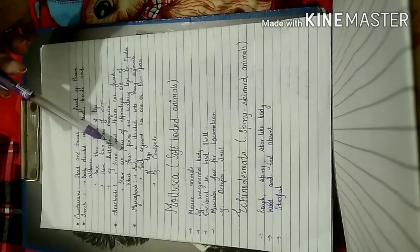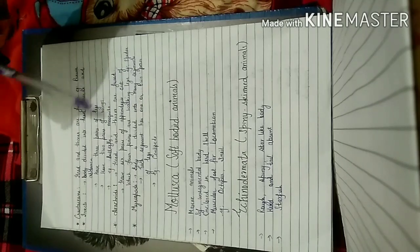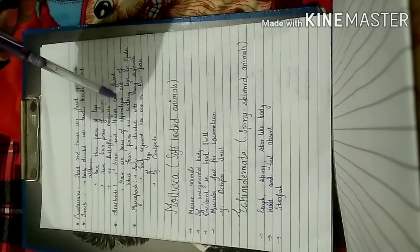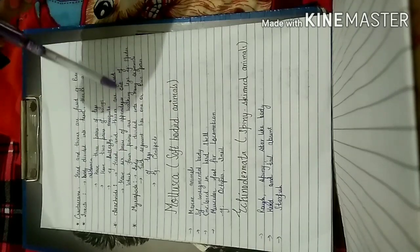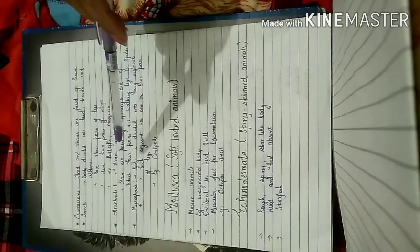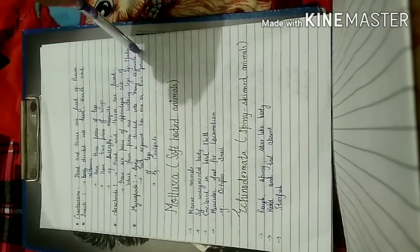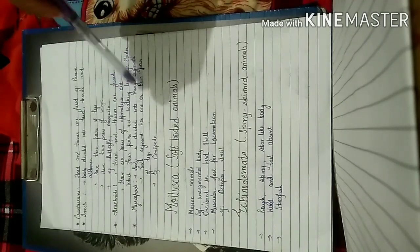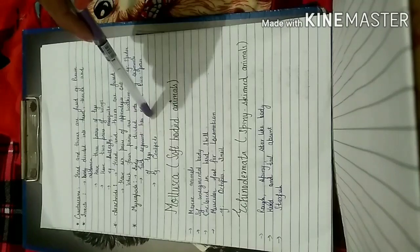Then arachnids. In arachnids, the head and thorax are also fused as in crustaceans. However, they have six pairs of appendages, out of which four pairs are walking legs — such as the spider. Then myriapods: in them, the body is divided into a number of segments and each segment has one or two pairs of legs, such as centipedes.